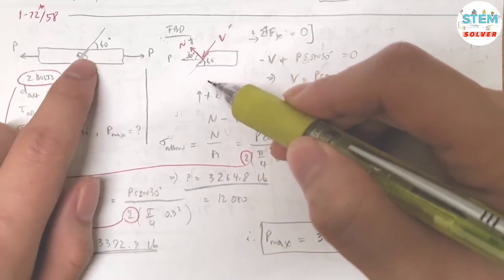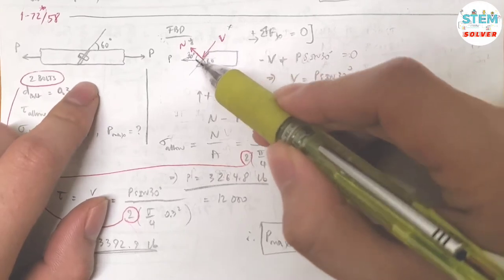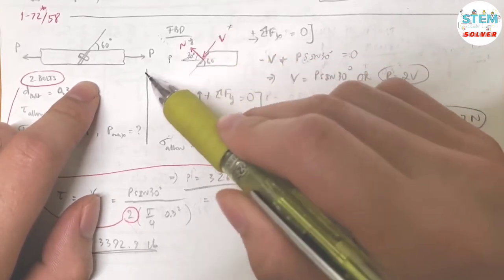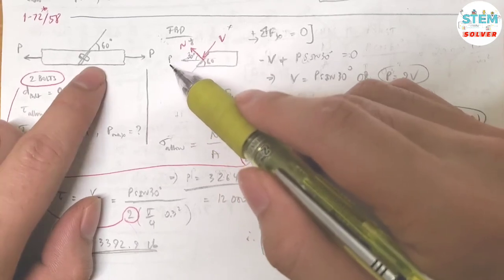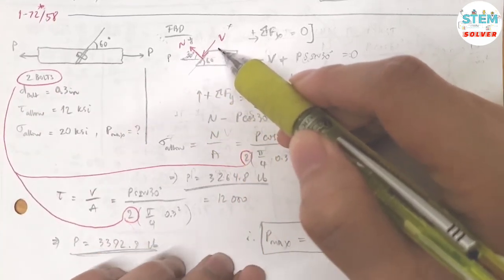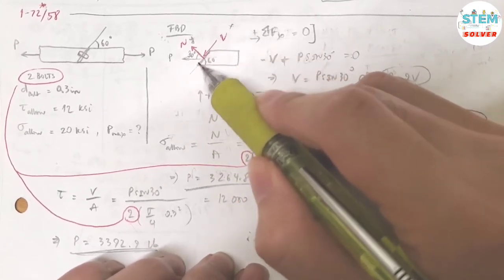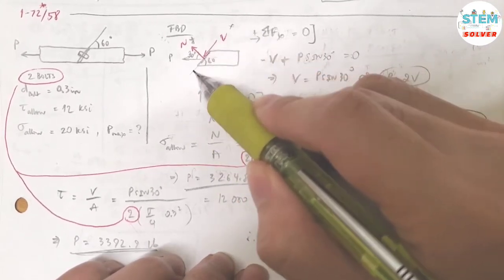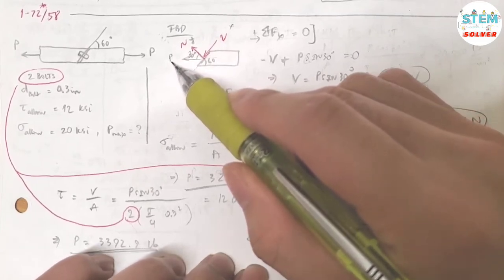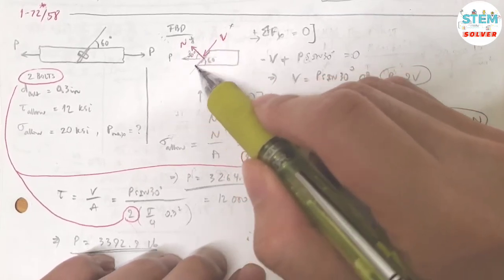Given that this angle is 60 degrees, I have the force P horizontally to the left. Let's determine some unknowns here. So parallel to this, the P force can be broken down into X and Y component forces.